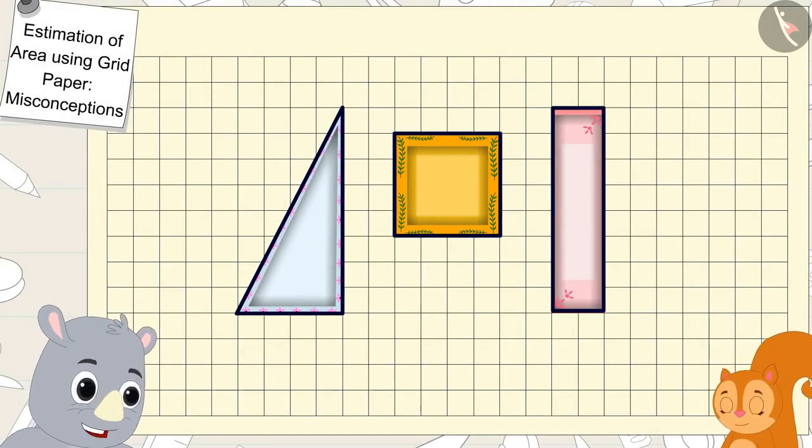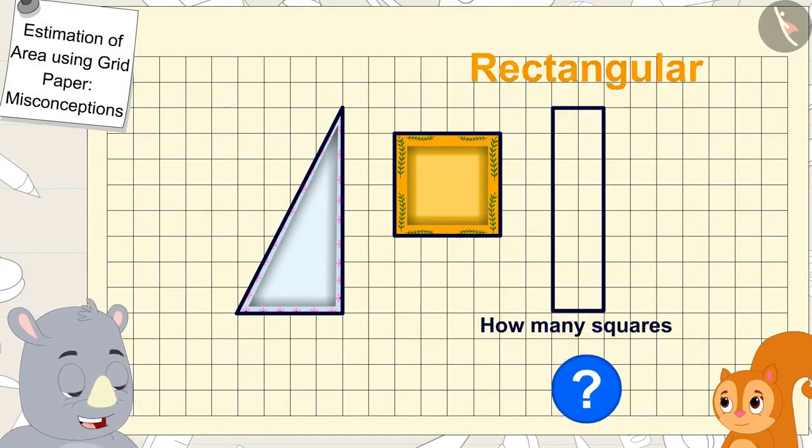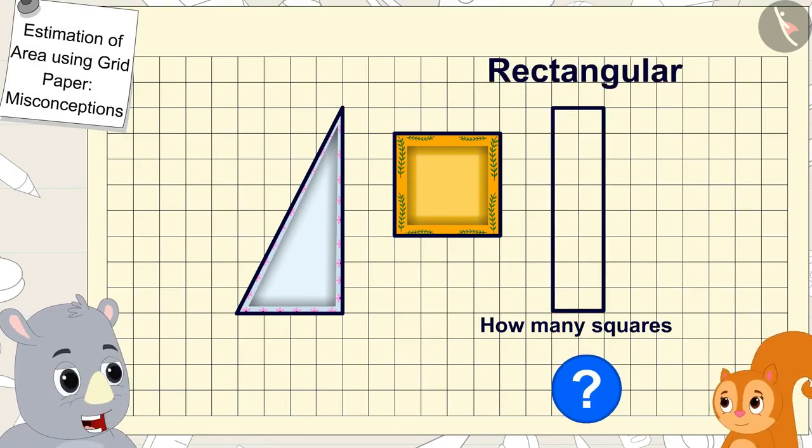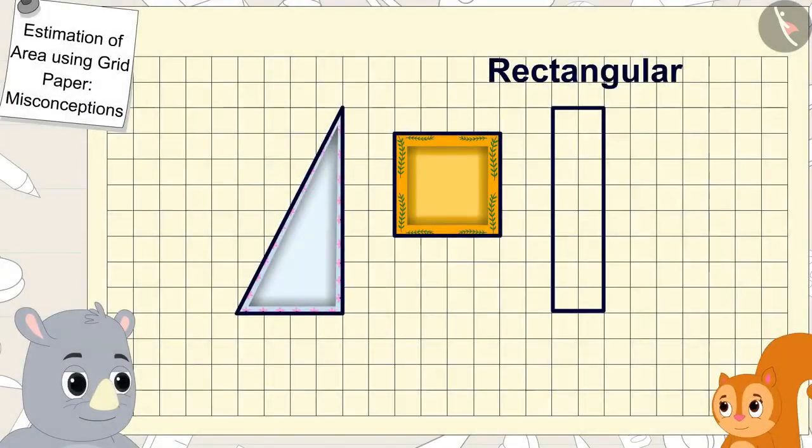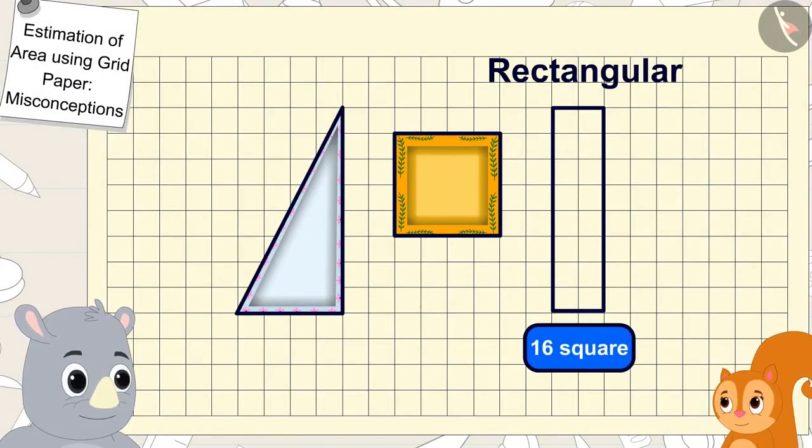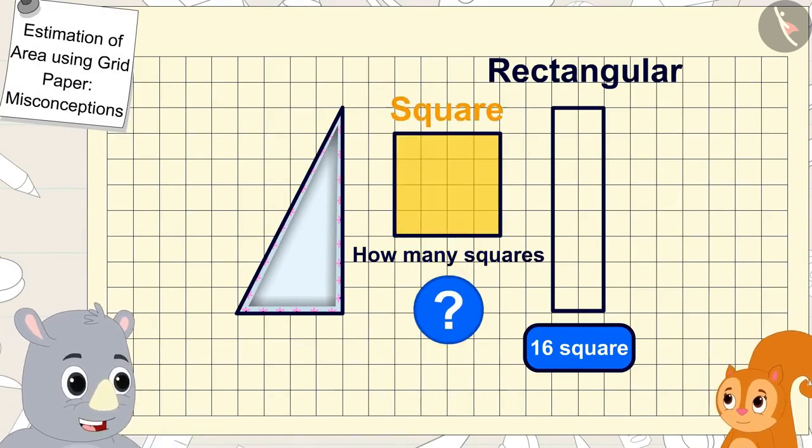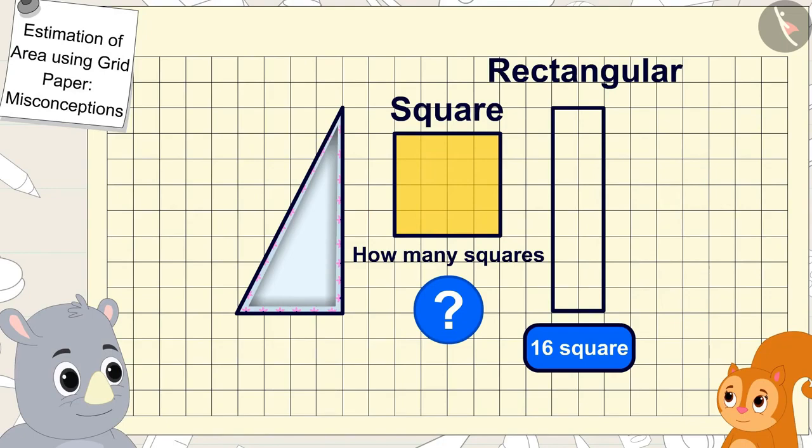Chanda, can you tell me how many squares are there in the area of the rectangular plate? Gaggoo asked Chanda. Chanda quickly counted sixteen squares. And how many squares are there in the area of the square shaped plate? Gaggoo asked. That's sixteen squares too, Chanda said shocked.